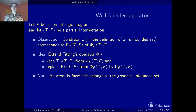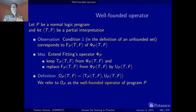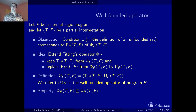With these informal explanations at hand, let's define this guy. We call omega_pi the well-founded operator, and the definition is obvious: we keep the first sub-operator of the fitting operator and replace the second one by the yuppie operator that gives us the greatest unfounded set. Now the first observation is that this well-founded operator gives us at least as many conclusions as the fitting operator, and hopefully more.